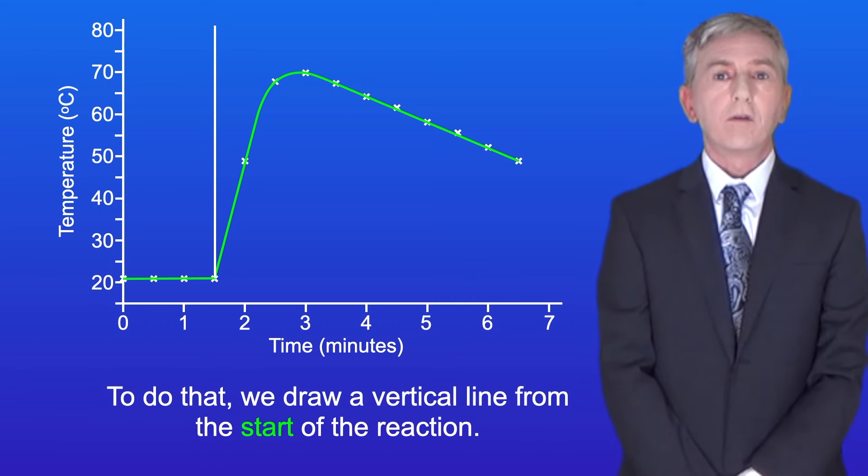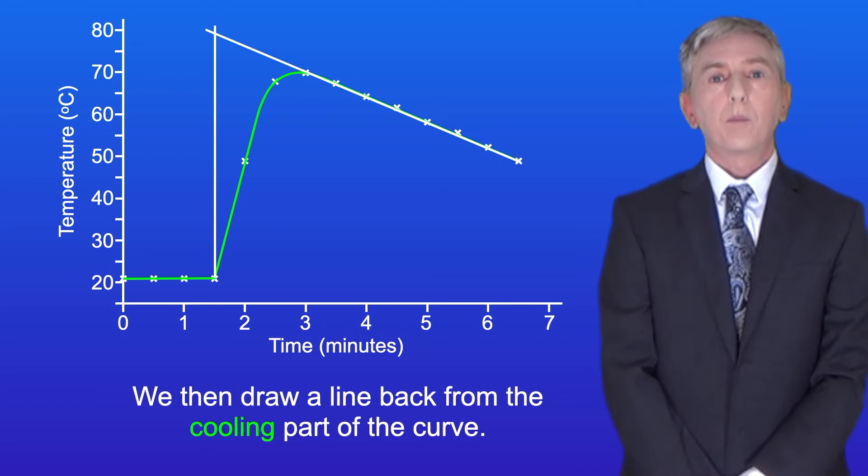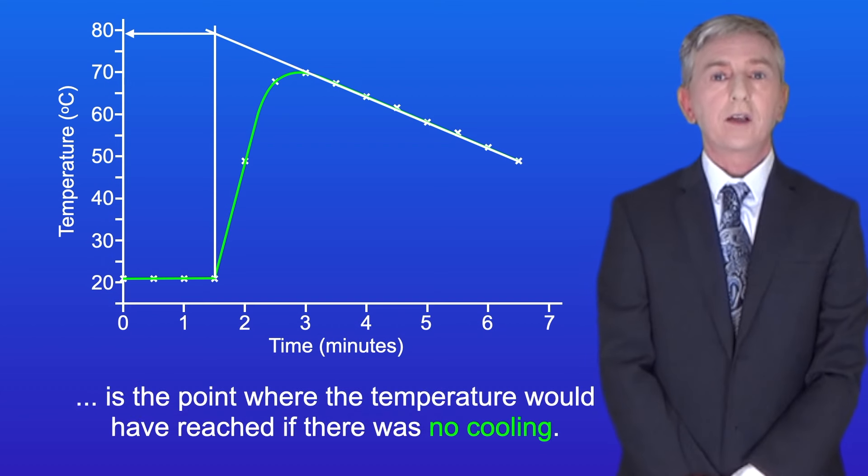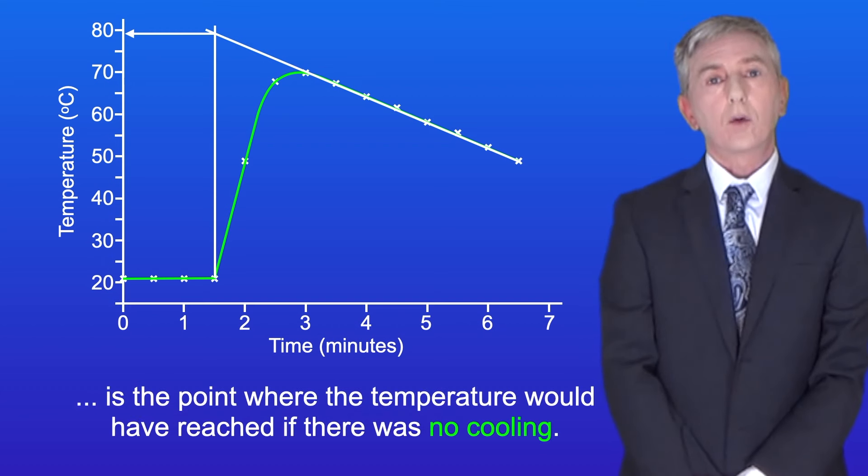To do that, we draw a vertical line from the start of the reaction. We then draw a line back from the cooling part of the curve. Where the lines meet is the point where the temperature would have reached if there was no cooling.